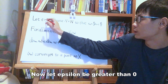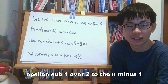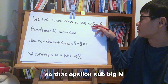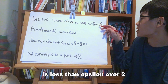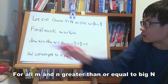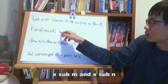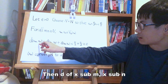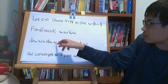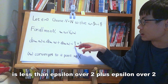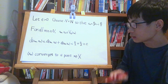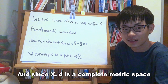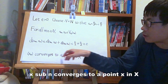Now let epsilon be greater than 0. Because the sequence epsilon_1 over 2^{n-1} converges to 0, we can choose N in the natural numbers so that epsilon_N is less than epsilon_1 over 2^{N-1}, which is less than epsilon over 2. For all m and n greater than or equal to N, x_m and x_n are in V_epsilon_N(x_N), so d(x_m, x_n) is less than or equal to d(x_m, x_N) plus d(x_N, x_n), which is less than epsilon over 2 plus epsilon over 2 equals epsilon. This means that x_n is a Cauchy sequence, and since (X, d) is a complete metric space, x_n converges to a point x in X.